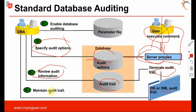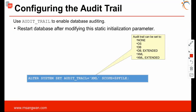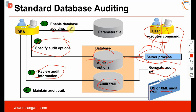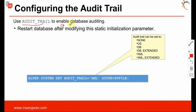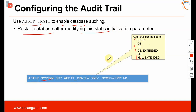This is standard database auditing — configuring the audit trail. The first part is in the initialization parameter. Audit trail is enabled at the database level; restart the database after modifying the static initialization parameter. The SQL*Plus statement is: ALTER SYSTEM SET audit_trail = XML SCOPE = SPFILE. Possible values are XML, DATABASE, OS, or NONE — these are the options for configuring the audit trail.